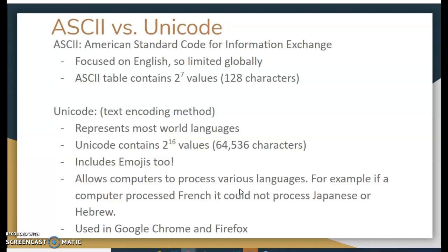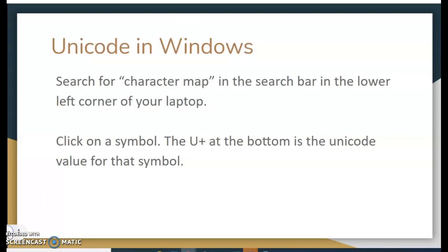Unicode provides a unique number for every character, regardless of what platform, device, language, or software you're using. Most modern software companies have adopted this because they can use many different platforms to represent many different languages. Before this, computers were only able to use the characters encoded in that specific language — they'd have to have two different encoding systems — but because of Unicode, they don't need to anymore.